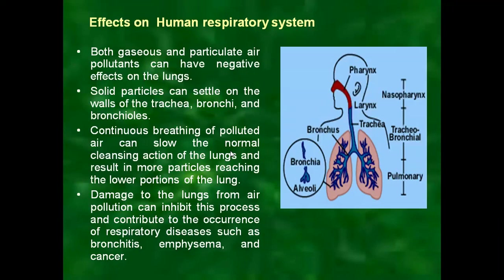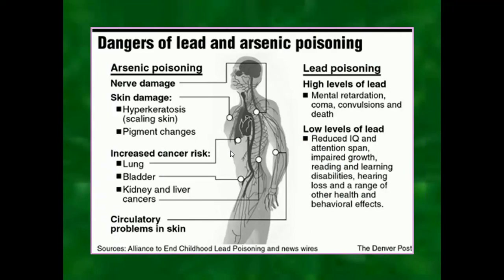The image clearly shows the dangers of lead and arsenic poisoning. There is nerve damage, skin damage, hyperpigmentation, scaling of skin, pigment changes, and increased cancer risk — including lung, bladder, kidney, and liver cancer. Living in an area surrounded by pollutants is an invitation to many diseases and circulatory problems. High levels of lead can cause mental retardation and coma, ultimately leading to death.